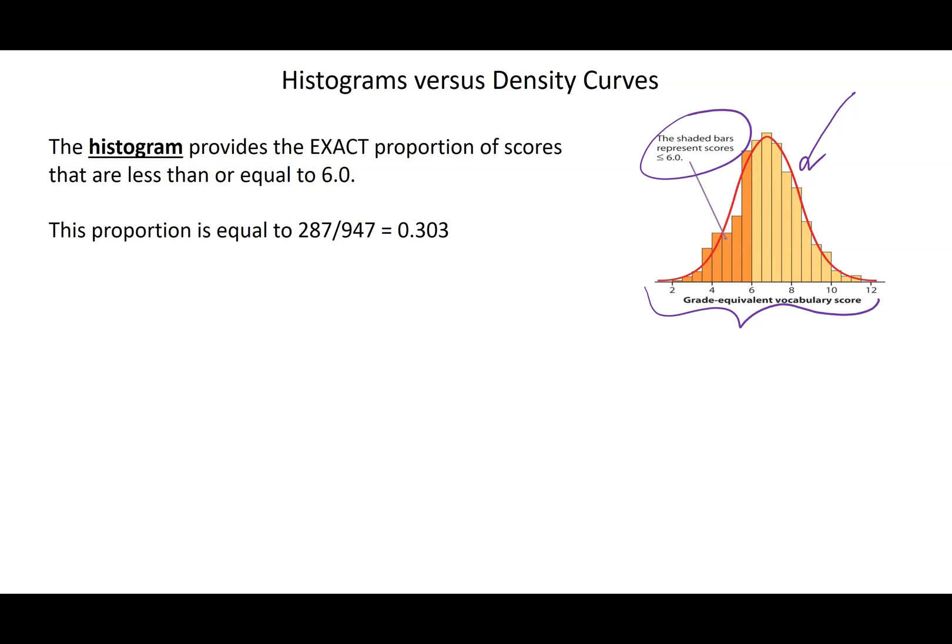So here, we can actually add up, they have them shaded in, those orange bars, there's 287 out of the 947. So 0.303. So a little less than a third of the folks in that histogram had a 6 or lower.